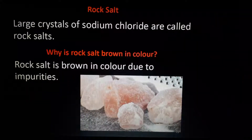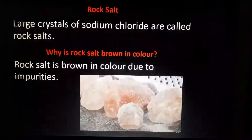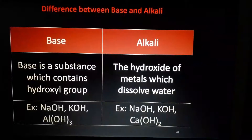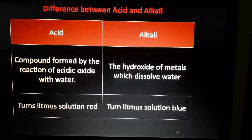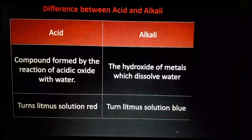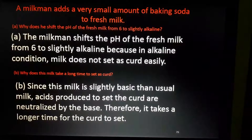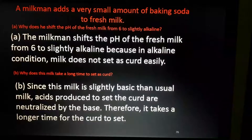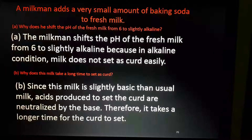Next we are studying about sodium chloride or rock salt — we will study it in the next class because it is very, very important. There are five more salts to study in this chapter: sodium chloride, bleaching powder, baking soda, baking powder, washing soda, and plaster of Paris. Difference between acid and alkali, difference between base and alkali — both are important questions. Why does the milkman add baking soda to fresh milk? Baking soda is a base — milk is a bit acidic, so if the milk stays acidic, it will change into curd.